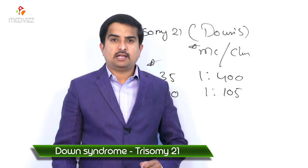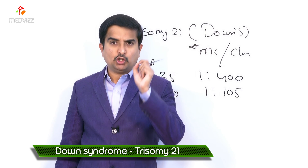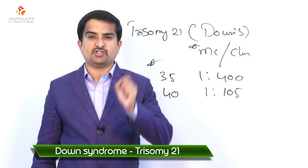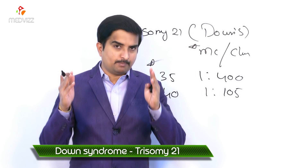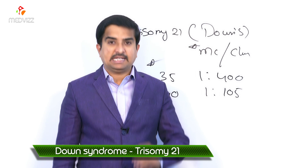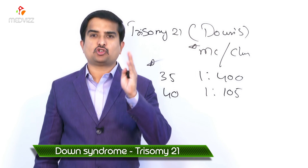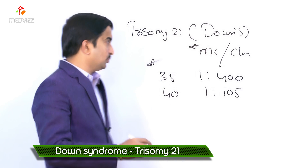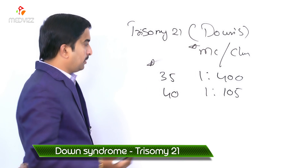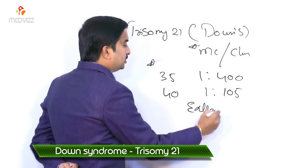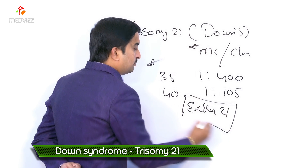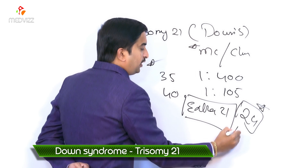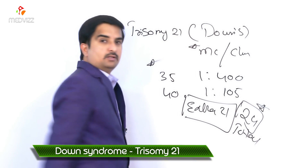Due to meiotic non-disjunction, approximately 90% of cases result from maternal non-disjunction, which correlates with maternal age. A gamete receives an extra chromosome 21, resulting in a total of 24 chromosomes in that gamete — the key point to remember is the extra chromosome 21.